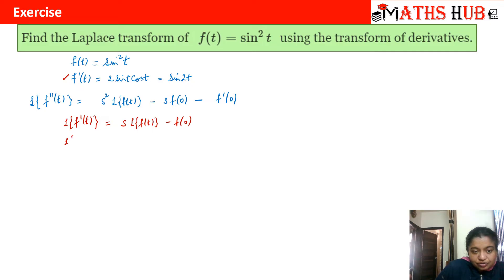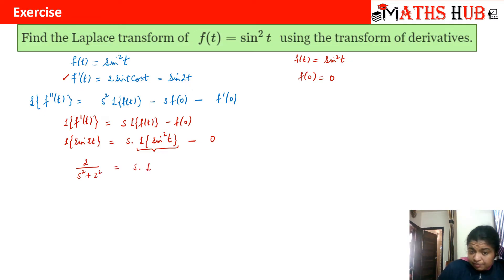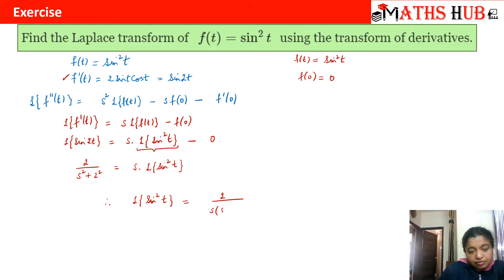Putting in the values: f'(t) = sin(2t), so Laplace of sin(2t) equals s times Laplace of f(t), where f(t) = sin²t. Then f(0) = sin(0) = 0, so that term vanishes. We know Laplace of sin(2t) is 2/(s² + 4), so that equals s times Laplace of sin²t. Therefore, Laplace of sin²t equals 2 divided by s(s² + 4).